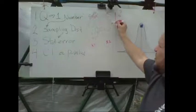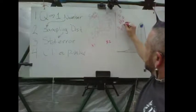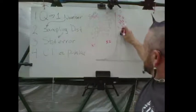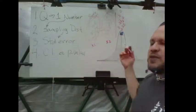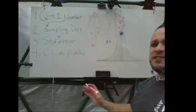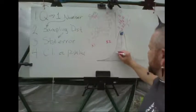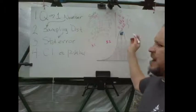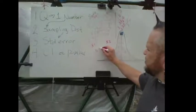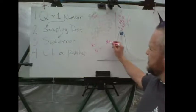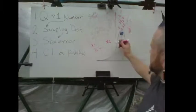Everybody gets a difference score, and then you have a sampling distribution of the differences. The mean of the differences is the same as the difference of the means — it works out the same. But if you're calculating by hand, you absolutely use the difference scores because it's a lot less work. You just do a single-sample t-test on those difference scores. Everything in this distribution is one person's difference between their after and before score.